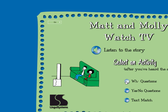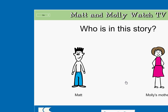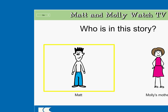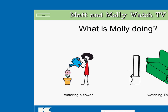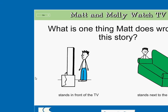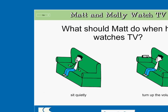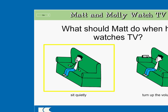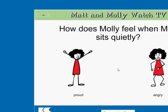Matt and Molly watch TV. Who is in this story? Matt. Molly's mother. Great job! What is Molly doing? Watering a flower. Watching TV. Great job! What is one thing Matt does wrong in this story? Stands in front of the TV. Stands next to the couch. Correct! What should Matt do when he watches TV? Sit quietly. Turn up the volume. Super! How does Molly feel when Matt sits quietly? Proud. Angry. Super!